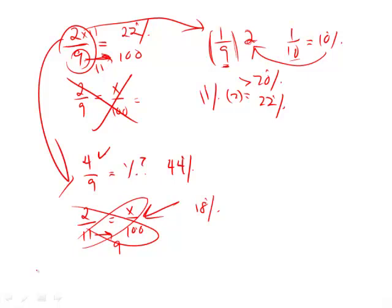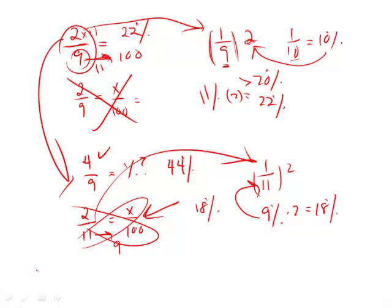This is very helpful information. You could have also said two elevenths is the same as one eleventh times two. One eleventh is equal to nine percent - I know this because nine times 11 is 99 percent. It's not exactly equal to nine percent, it's almost nine percent. Nine percent times two gives me 18 percent. Being able to work between fractions and percents, going back and forth, is something that can be very helpful.